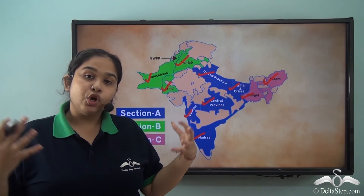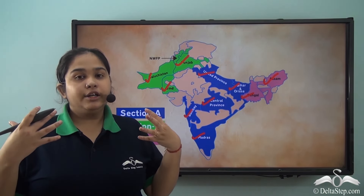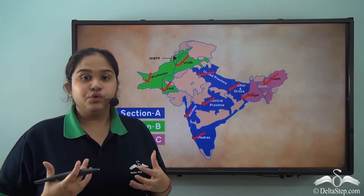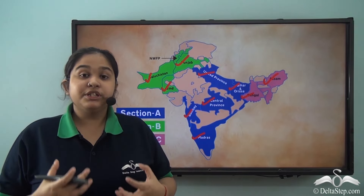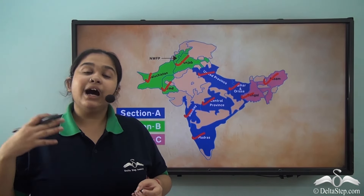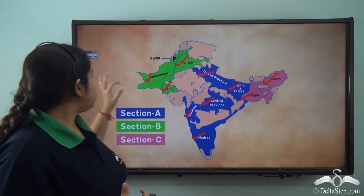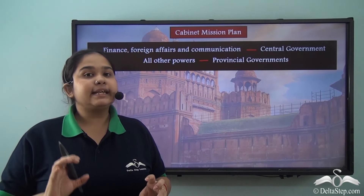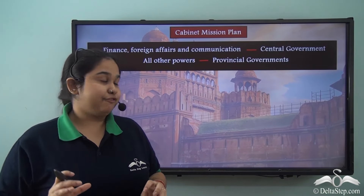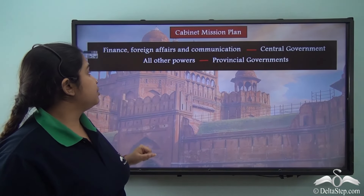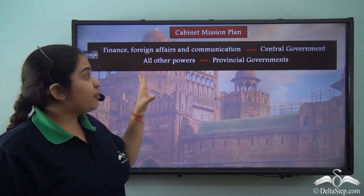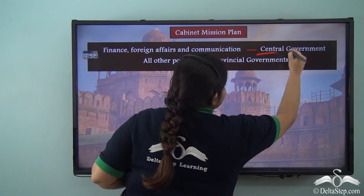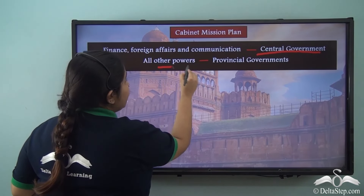Another important point that the Cabinet Mission stated was that these groups could choose to move out of their grouping systems and join another group they wished for only after five years, and only after a majority of the legislatures in their group decided to do so. So there was an option given that they could secede, but only after five years.